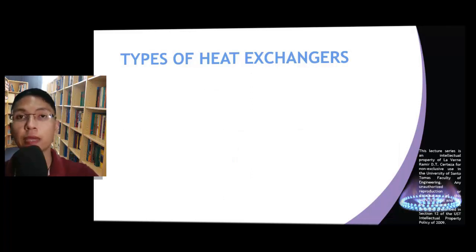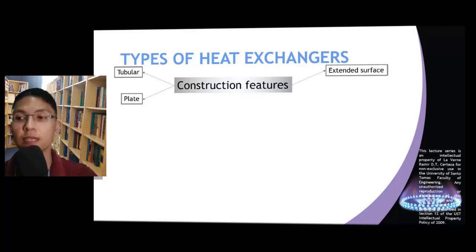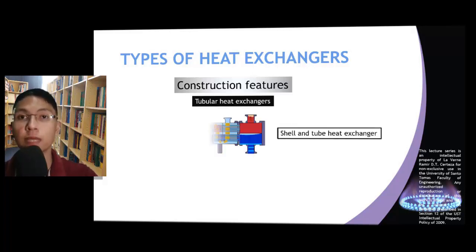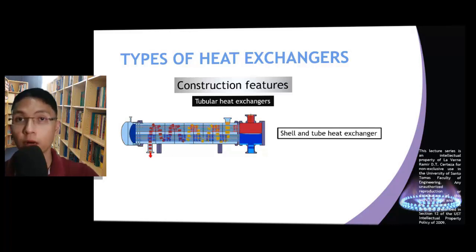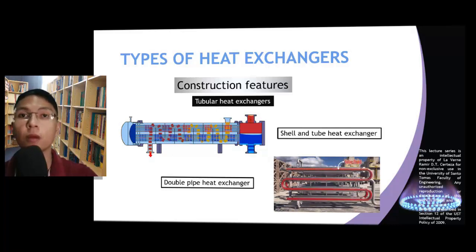The third characteristic by which we can categorize heat exchangers is related to how they are constructed. Under this criterion, we can categorize them as tubular heat exchangers, plate heat exchangers, heat exchangers with extended surfaces, and heat exchangers with regenerative matrices. Tubular heat exchangers are built by putting rows of tubes in parallel to one another, such as in a shell and tube heat exchanger, or by concentrically putting one tube inside another, such as in a double pipe heat exchanger.